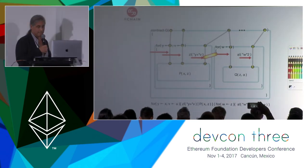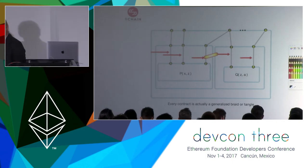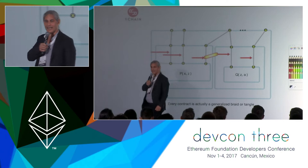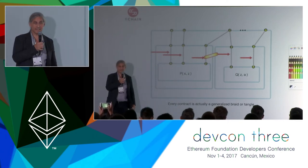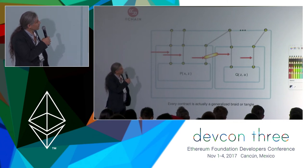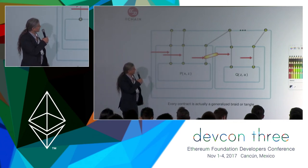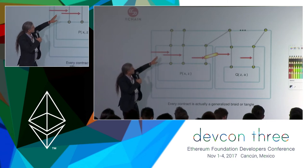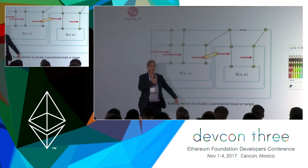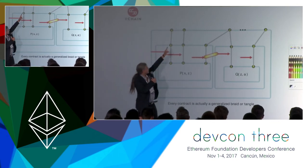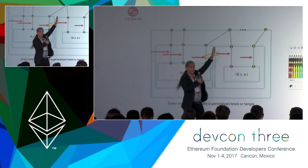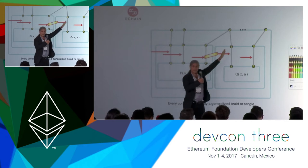If I remove all the pesky syntax and just look at the graph evident in the flow, I can see some really cool things. Every contract is actually just a braid or a tangle. Here's one set of strands — sometimes the strands can fork — and there's another set of strands that weave across these, having to do with information flow.